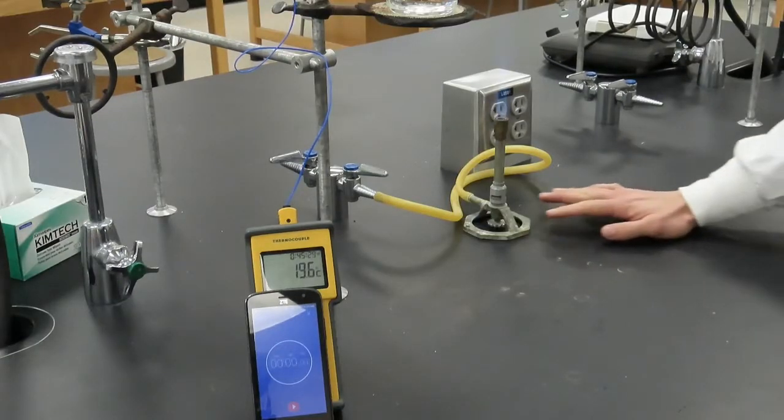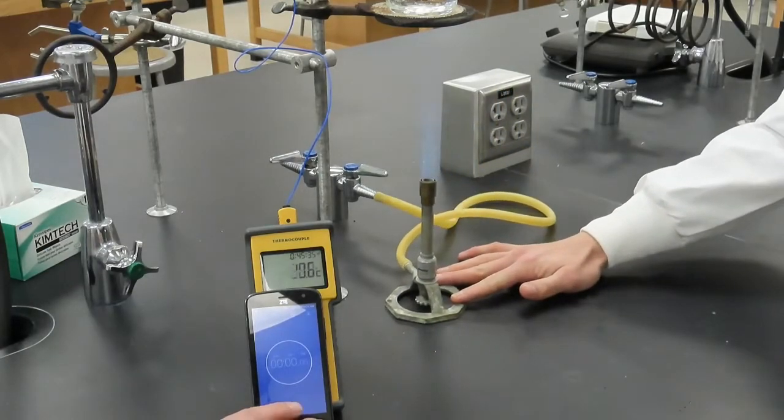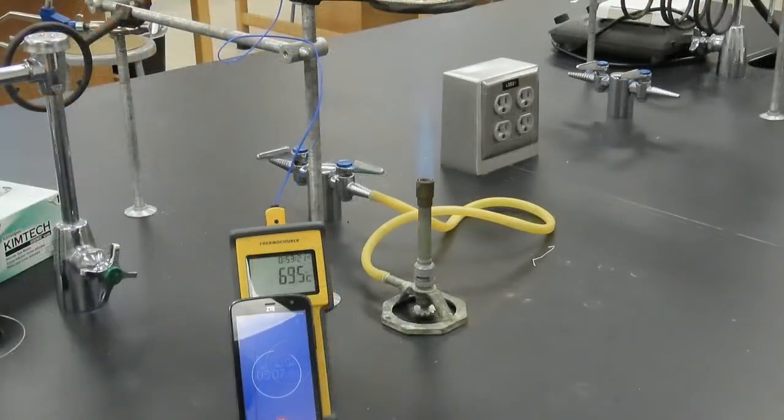And finally, with the very high flame, the water temperature increased from about 20 degrees Celsius to 69 degrees Celsius, an increase of about 49 degrees Celsius. Notice that the very high flame was able to heat the water about twice as fast as the low flame.